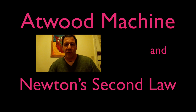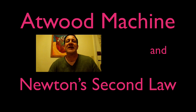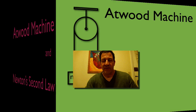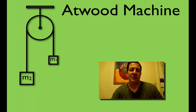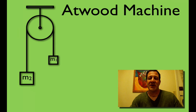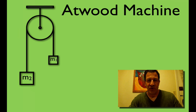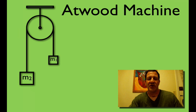In today's video I'm going to go over the Atwood machine, Newton's second law, and constant acceleration. Because in the Atwood machine we have constant acceleration, and that's what the Atwood machine was originally used for. It was used by Reverend George Atwood to study the laws of motion including constant acceleration.